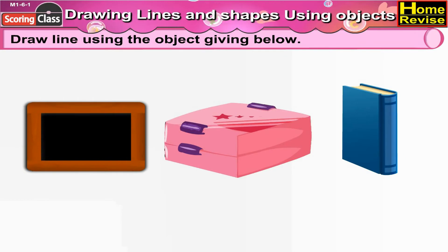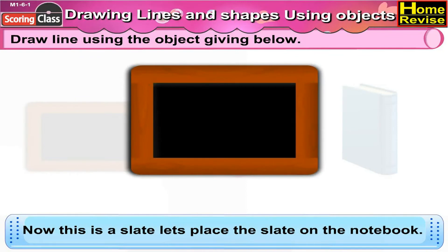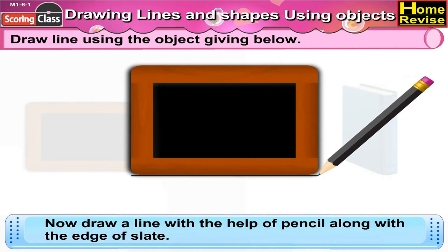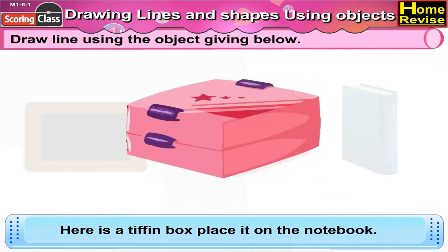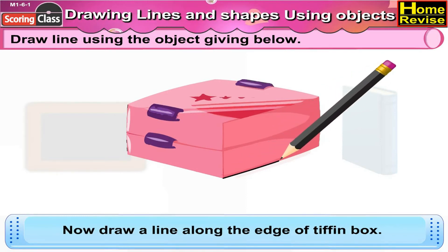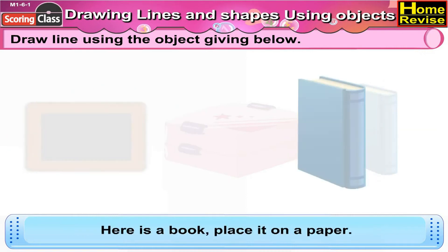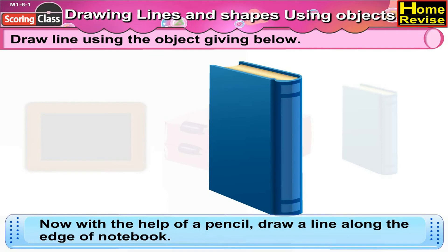Draw lines using the objects given below. Now, this is a slate. Let's place this slate on the notebook. Now draw a line with the help of a pencil along the edge of the slate. Here is a tiffin box. Place it on the notebook and draw a line along its edge. Here is a book. Place it on the paper and with the help of a pencil, draw a line along the edge of the notebook.